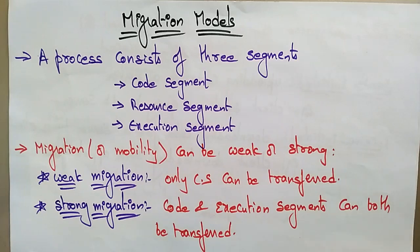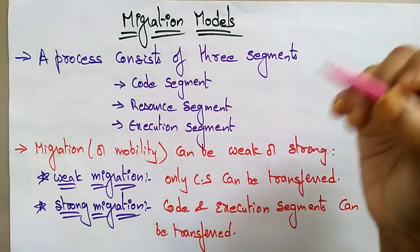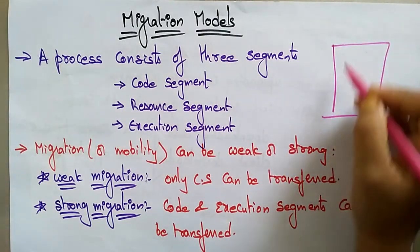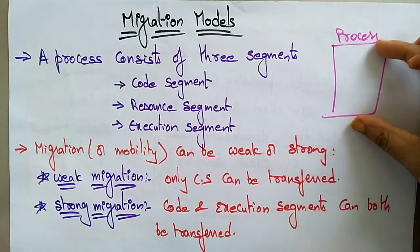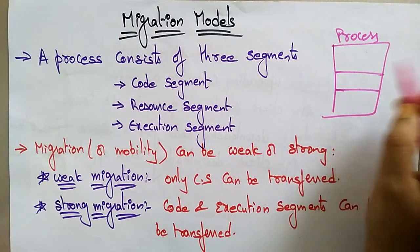Welcome back. In the previous video I explained about code migration. Now let's see what the different migration models are. If you want to generate a code migration in a distributed system you can use any one of the models. Before seeing the different migration models, you should know that a process consists of three segments.